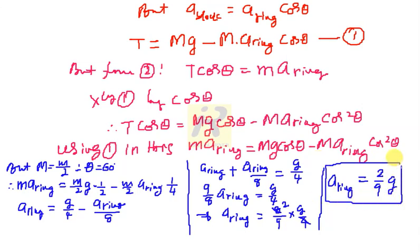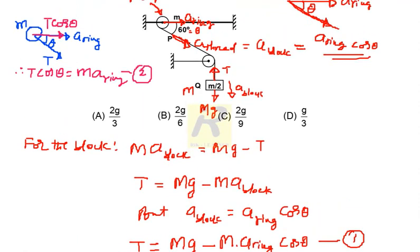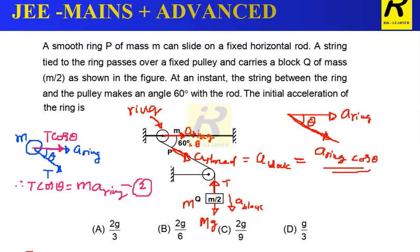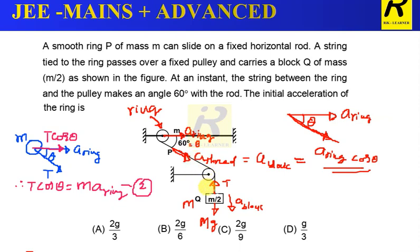So, acceleration of the ring is 2 by 9 g. So, answer is expressed in terms of acceleration due to gravity. So, just observe, it is 2 by 9 g. That should be your answer for this question. So, the acceleration of this ring which is moving here, so this is equal to 2 divided by 9 g. So, 2 divided by 9 g is here. Option c is correct.